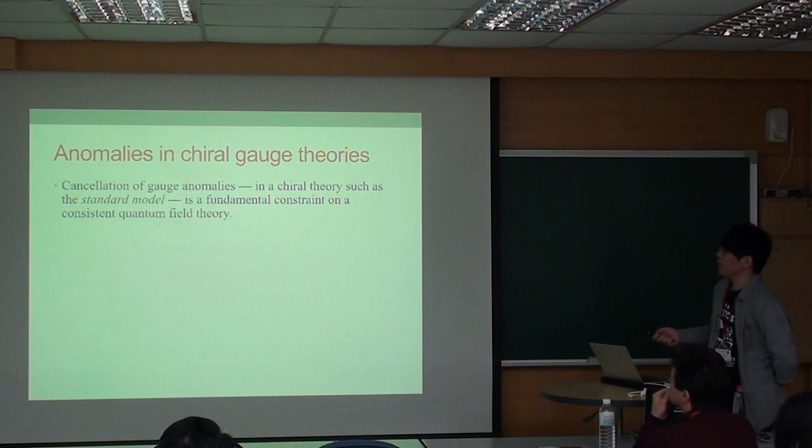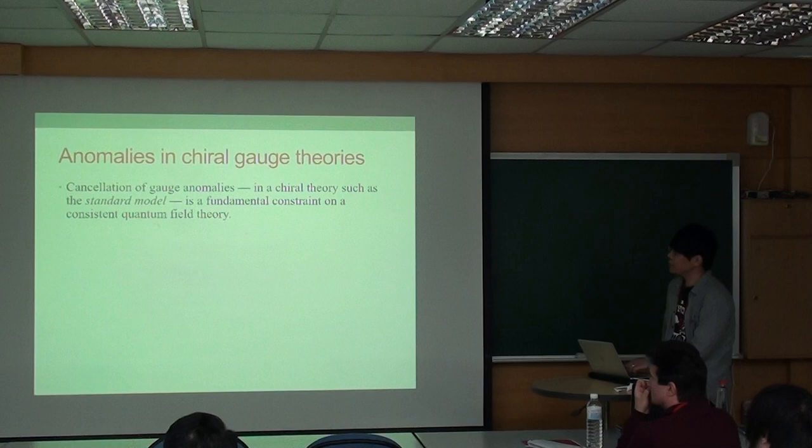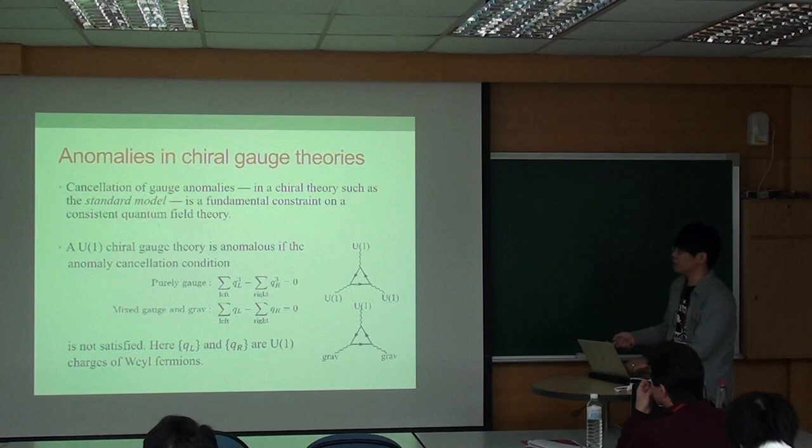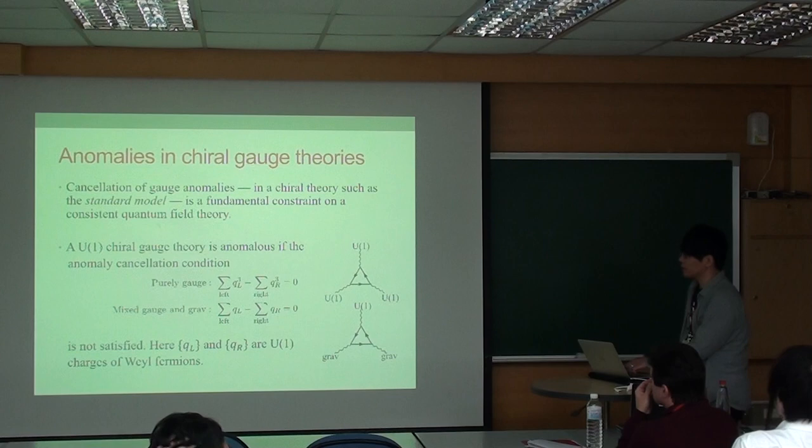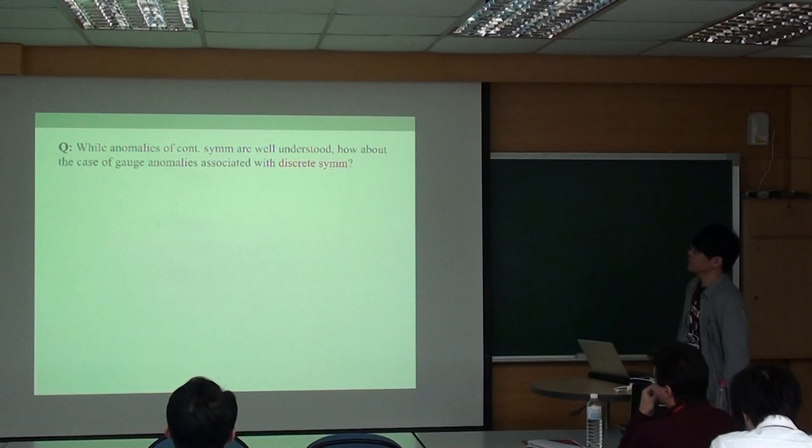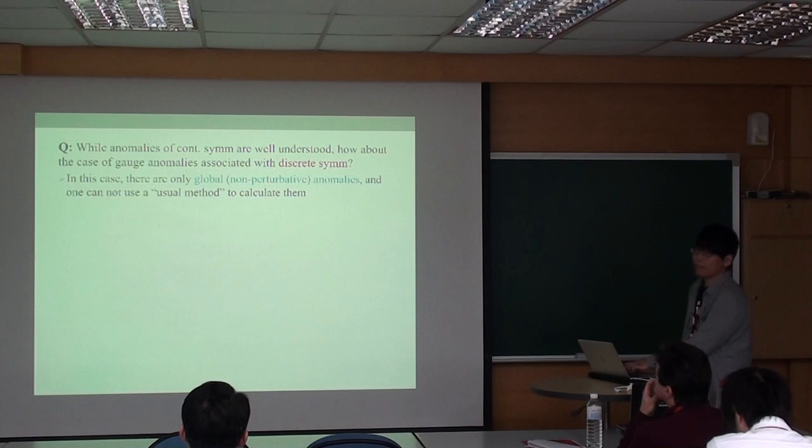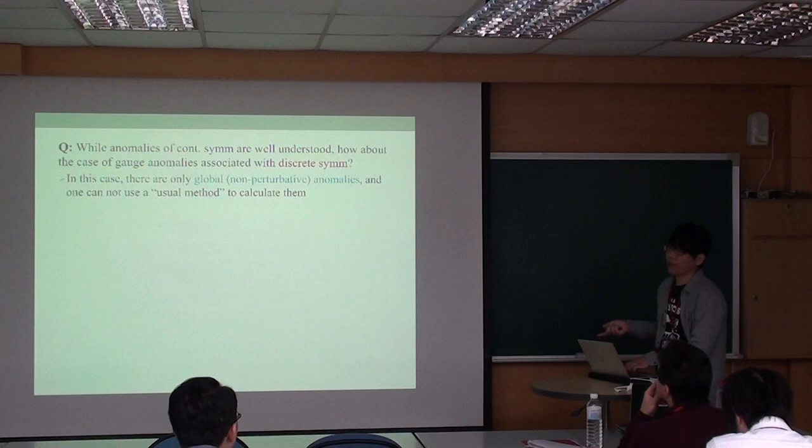The cancellation of gauge anomalies is a fundamental constraint in quantum field theory. For a chiral gauge theory, we have the anomaly cancellation condition to avoid both pure gauge and gravitational anomalies. These two types of anomalies involve triangle Feynman diagrams. While anomalies of continuous symmetry are well understood, the case of discrete anomalies associated with discrete symmetries - where they are only global or non-perturbative anomalies - one cannot use the usual method such as the perturbative Feynman diagram calculation.